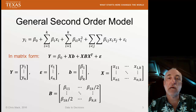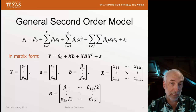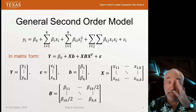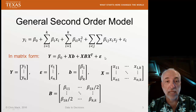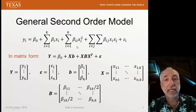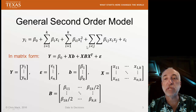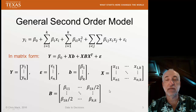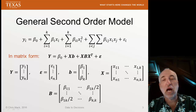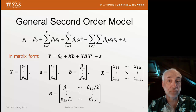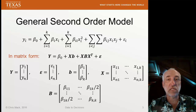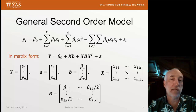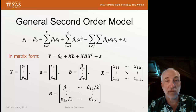A general second-order model, if we write out all the terms, would look something like this. If we have k factors, we'll have k first-order terms, then another k second-order terms — that is, all the squared terms — and then all the interactions between those k factors. We can express that in matrix form. There are quite a few possibilities in the modeling when we add second-order as well as interaction terms.